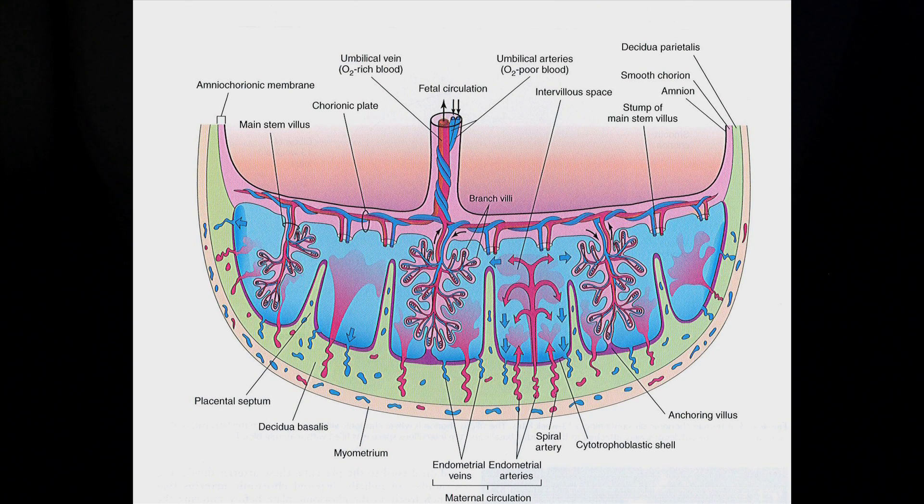Here you can see a cross-section of the placenta. And within the intervillus space, which is that blue part, you can see the spiral arteries, which carries the deoxygenated blood from the baby back to the mother. And then the mother's blood vessels pick up the deoxygenated blood, but also take oxygenated blood from greater concentration of the mother to the lesser concentration of the baby.